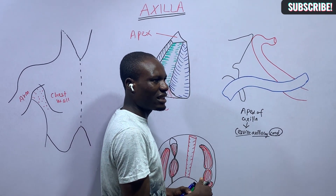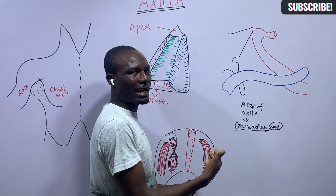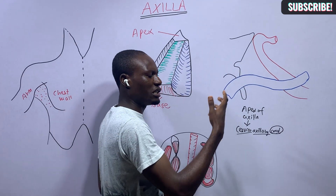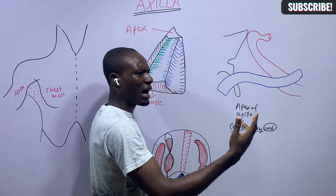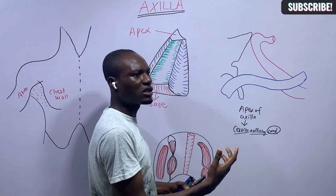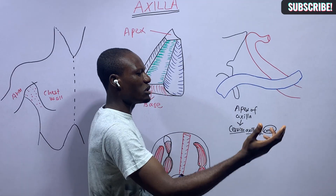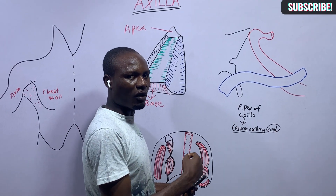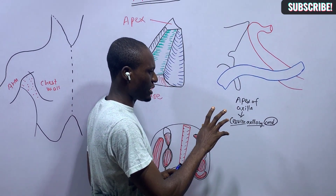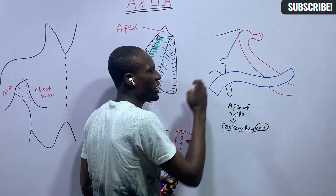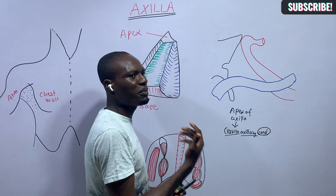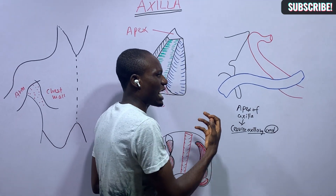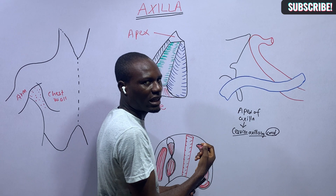From the axilla, structures exit and enter the arm. From the arm, the cords of the brachial plexus give rise to branches that supply the various muscles of the extremities. So it is a space, and every space must allow for the passage of structures.